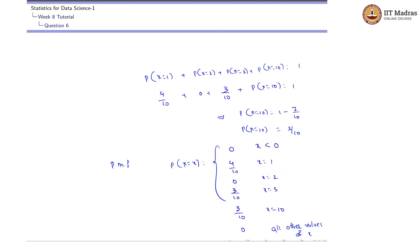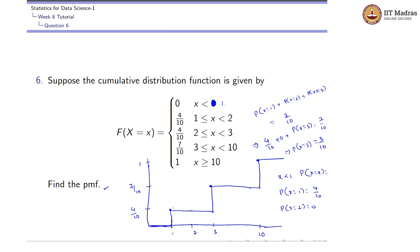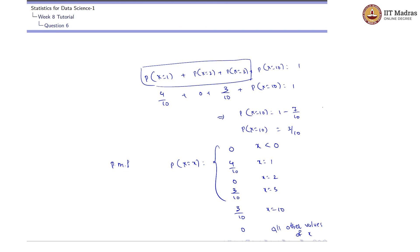You can solve for P(x=10) in a different way. We already know the cumulative probability up to x = 3 is 7/10. So 7/10 + P(x=10) = 1, which implies P(x=10) = 3/10. You can solve it directly that way.